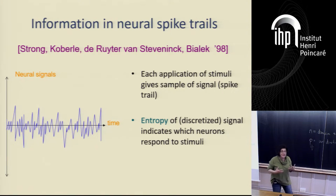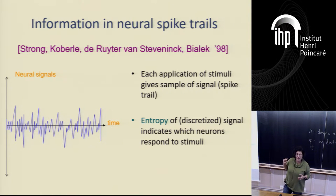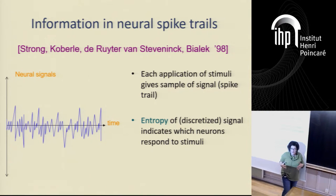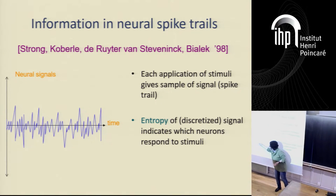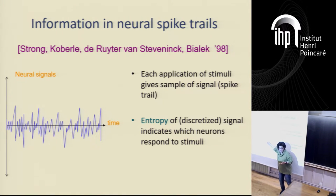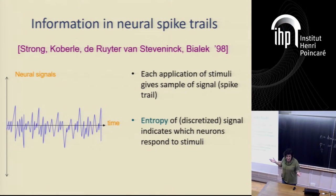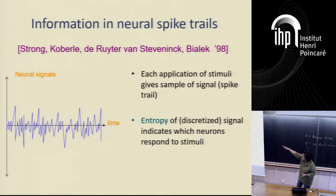Here's another place where you might want to estimate the entropy of a distribution. Some physicists working on neural signals were trying to see whether a certain neuron was responding to a certain stimulus. They kept stimulating the neuron, looking at the entropy of the signal after stimulation. This has a huge domain size because if you discretize the signal enough to get a good approximation, you get a huge domain. So how do you estimate the entropy in sublinear time? This was a problem of interest to them and to many other communities.